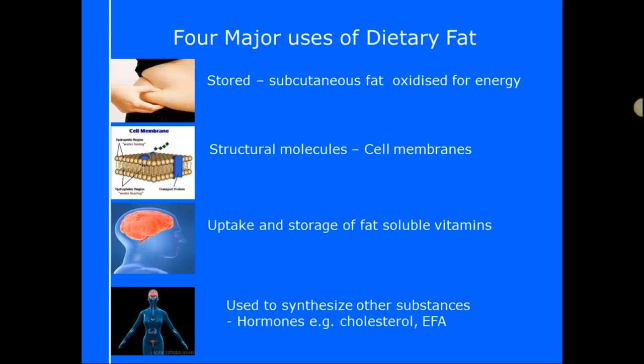We have four major uses for the fats that we consume. First, we store dietary fat in our subcutaneous fat — the fat stored just underneath the skin. In the picture here, when you grab a fold of skin, a skinfold measurement, that's also measuring the amount of fat under the skin in that subcutaneous layer. We can use that fat for energy and release it back out of those energy stores.